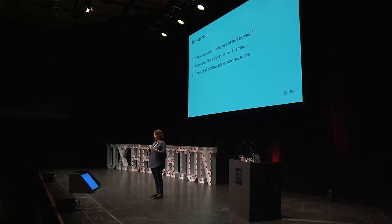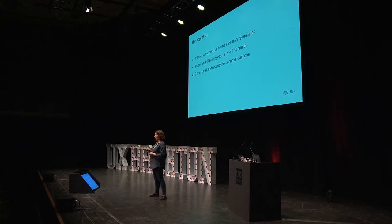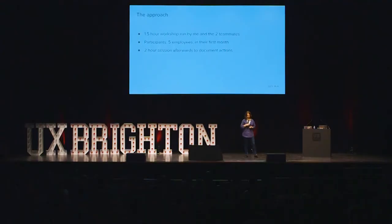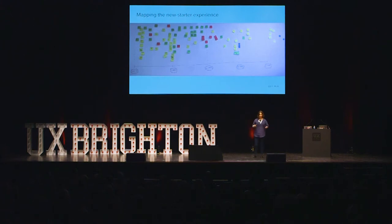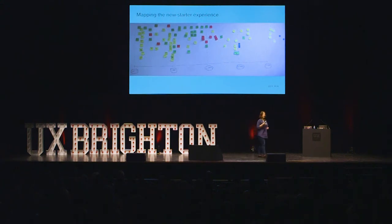This was the approach: I set up a one-and-a-half hour workshop, which I ran with the two stakeholders — the teammates who really cared. We invited five people who had recently joined the company in the last four weeks, which was quite important so the experience was fresh in their mind. After the workshop finished, we did a two-hour mop-up, myself and the stakeholders, to talk about what we learned and what we could apply as quick wins. We drew this big map on the wall, and got the participants to tell us what things they had been made to do in the first four weeks, how they felt about that over time, and how the feeling had changed.